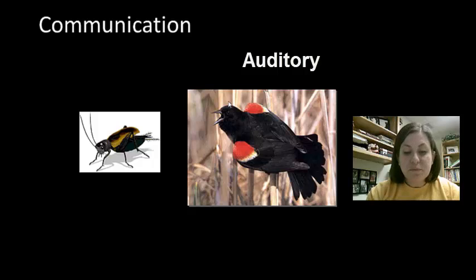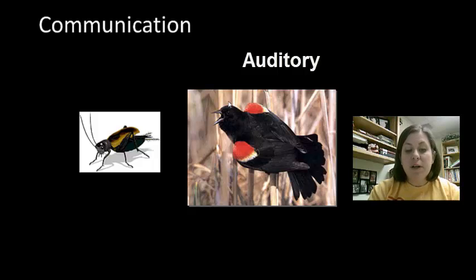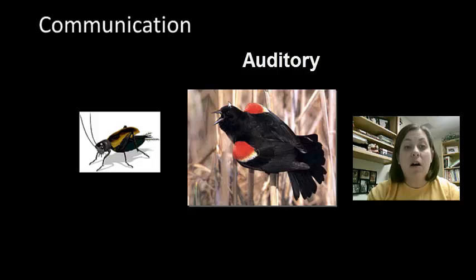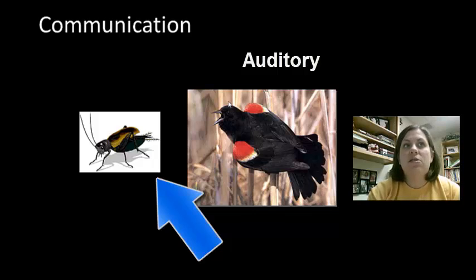The next type is auditory communication, where animals use vocalizations and sound. These are useful for mating calls, distress signals, and marking territory boundaries. In jungles you can hear monkeys making sounds to mark off their territory — if you can still hear them, they consider that area their territory. Auditory communication is faster than chemical communication and also works both day and night. You can also change the pattern, intensity, and frequency of the call, as shown with birds and crickets — that's why when you get closer to a cricket, they'll stop chirping.